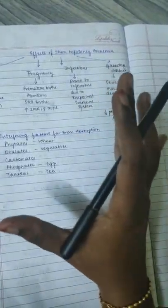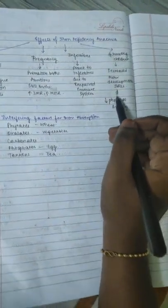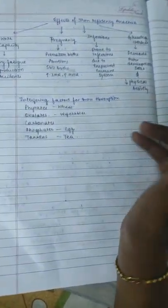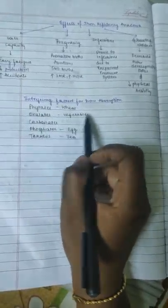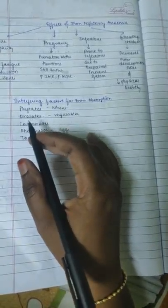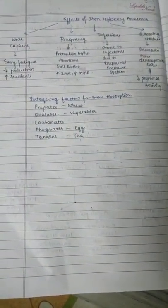In iron deficiency anemia, children are impacted with motor development skill deformities and decreased physical activity. As I previously said about interference factors for iron absorption, phytates are present in wheat, oxalates in vegetables, phosphates in eggs, and tannins in tea. This is all about iron. Thank you.